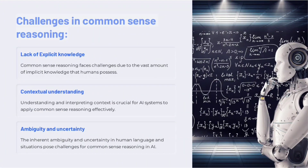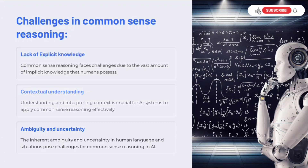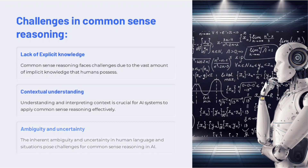Challenges in Common Sense Reasoning. Lack of Explicit Knowledge: Common Sense Reasoning faces challenges due to the vast amount of implicit knowledge that humans possess. Contextual Understanding: understanding and interpreting context is crucial for AI systems to apply Common Sense Reasoning effectively. Ambiguity and Uncertainty: the inherent ambiguity and uncertainty in human language and situations pose challenges for Common Sense Reasoning in AI.